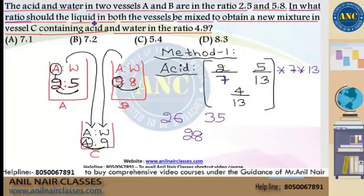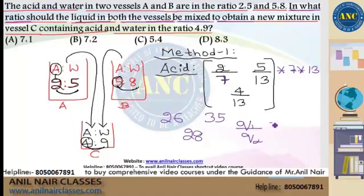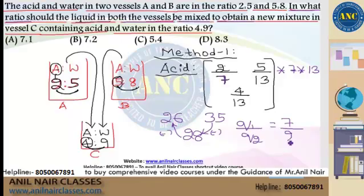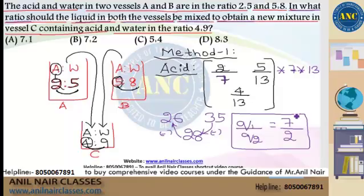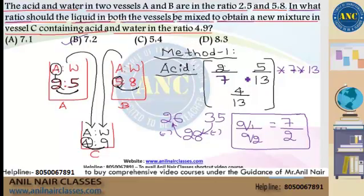The question asks in what ratio the liquids from vessels A and B should be mixed. Using the allegation formula, Q1/Q2 = (P2 − P)/(P − P1) = (35 − 28)/(28 − 26) = 7/2. So the answer is that vessels A and B should be mixed in the ratio 7:2, which is option B. Whether you take acid as the base parameter or water, you get the same answer.